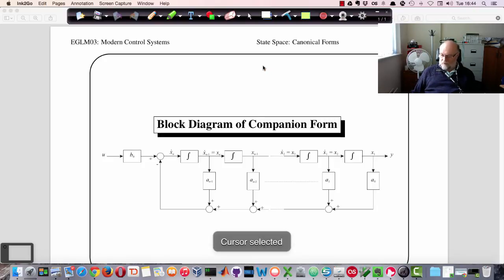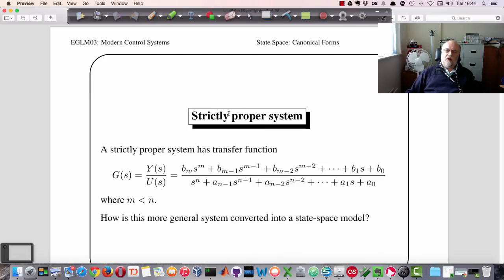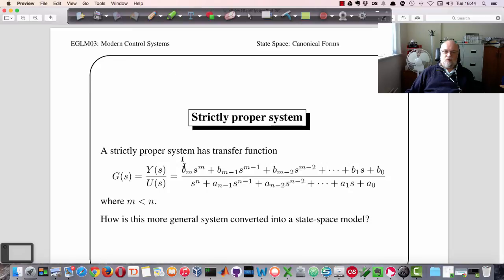So the next thing to think about is, okay, so that gave us the equations of motion for our state space model for a system which had no derivatives in the numerator. But what if we do have derivatives in the numerator?